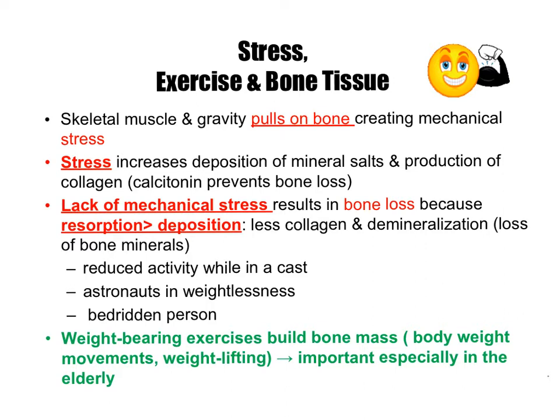The skeletal system is kind of like the muscular system in that the more you exercise and the more stress you put on those bones, the stronger they tend to get. Stress is going to increase the deposition of those mineral salts — that is done by the osteoblasts. The osteoblasts secrete those mineral salts which make the bone matrix and make your bones stronger. Stress will also increase the production of collagen fibers; roughly 25% of your skeleton is made up of collagen, which gives it elastic strength — the ability to bend without snapping.